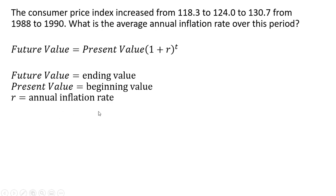We're going to try to solve for r, the annual inflation rate. And t is going to be the number of periods of growth, so this 118.3 goes to 124, and then this 124 goes to 130.7. So we have two periods, or two years here, of growth in the CPI.